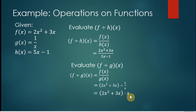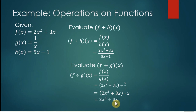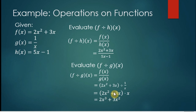The reciprocal of 1 over x is x. Our remaining task is to multiply the two expressions: x times 2x squared is 2x cubed, and x times 3x is 3x squared. We maintain the addition operation, giving us 2x cubed plus 3x squared. That covers our different operations on functions — thank you for listening.